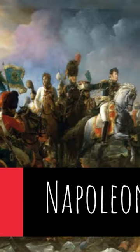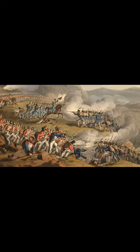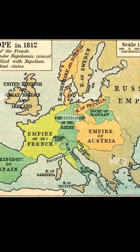The Napoleonic Wars were a series of conflicts that took place from 1803 to 1815. These wars were fought by France against various coalitions of European powers, led by Britain, Prussia, Russia, and Austria. The wars were named after Napoleon Bonaparte, the French emperor who led his armies to conquer much of Europe.